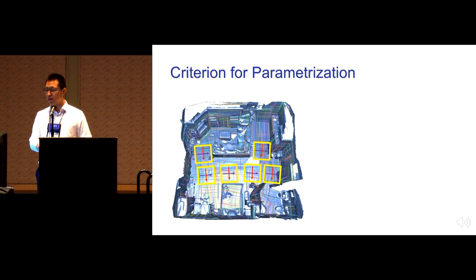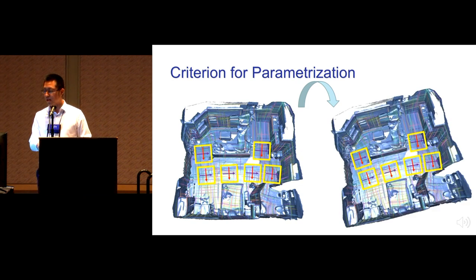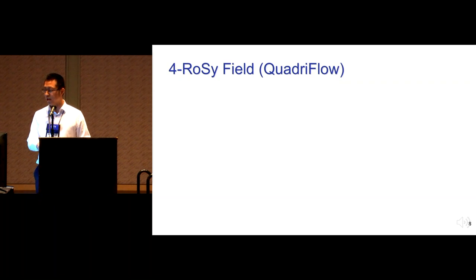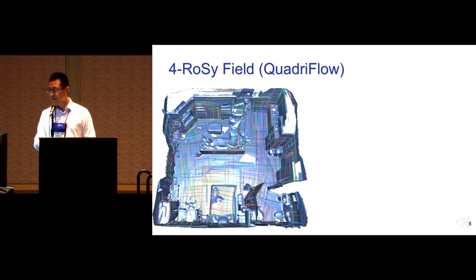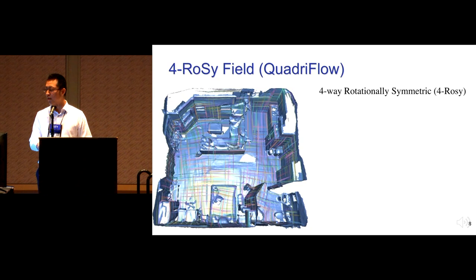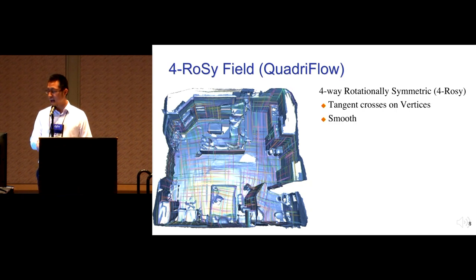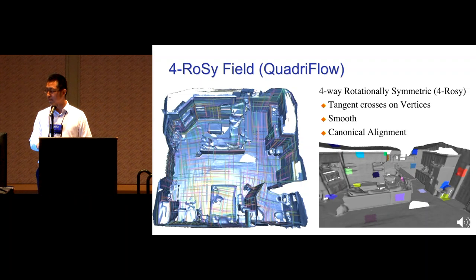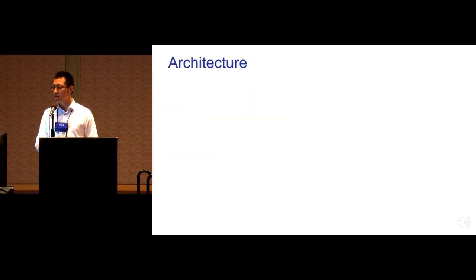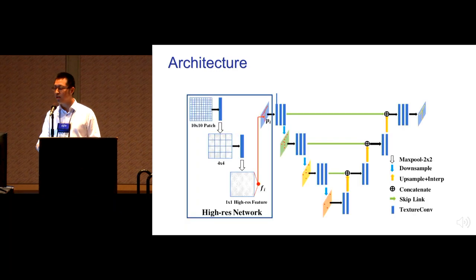When we rotate the geometry, the tangent vectors should rotate accordingly. We borrow the concept of a 4-RoSe field from geometry and use an existing method called QuadriFlow to compute it. The 4-RoSe field offers two tangent vectors for each point forming a cross that is four-way rotationally symmetric. It is smoothly aligned at flat regions and canonically aligned with principal directions at curved regions. Based on this field, for each sample we extract a square neighborhood and derive a U-Net-like architecture.